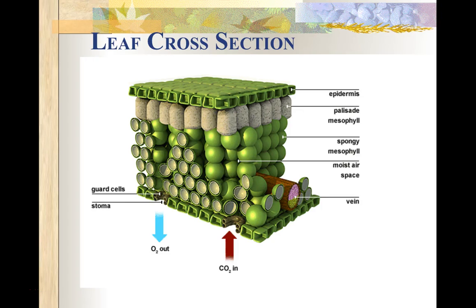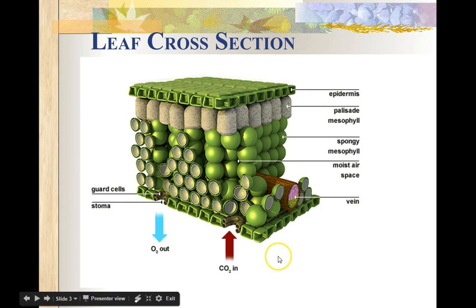Hey there biology students, Mr. Mechnick with a quick little podcast on the cross-section of a leaf. So to help you really understand the process of photosynthesis, we need to understand where the magic happens. So this is a cross-sectional view of a leaf.